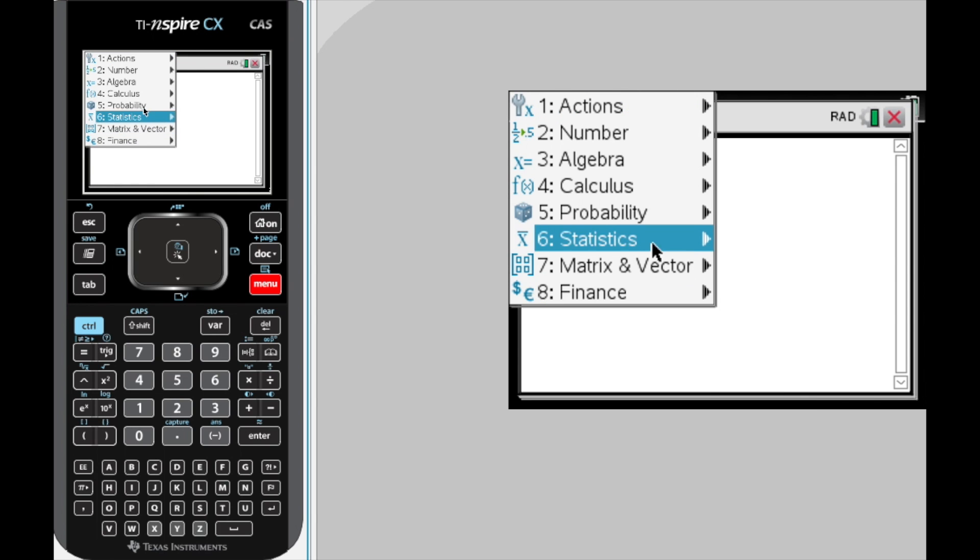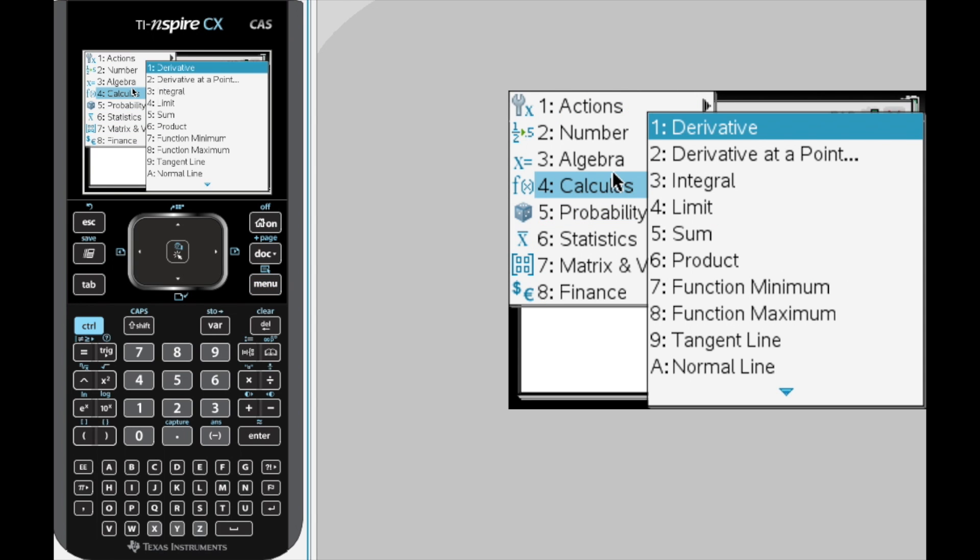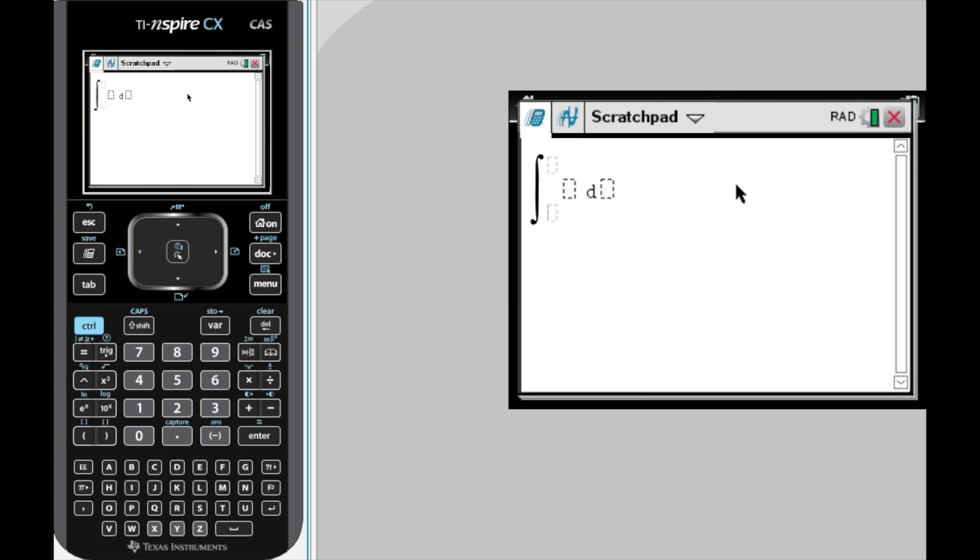We are going to hit menu, go to calculus, choose integral. Now this is a CAS calculator. It will do more than just numerical integration. But we are going to put in a 2 for the lower limit. Head up here to the upper limit and put in 5. Same thing, go into the actual integrand area and do some kind of fraction notation.